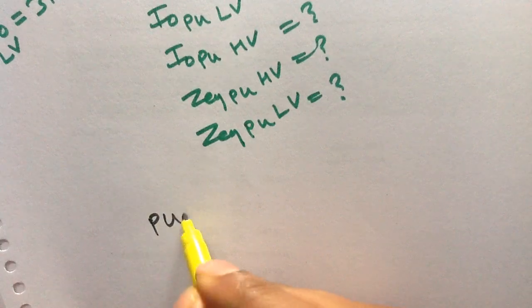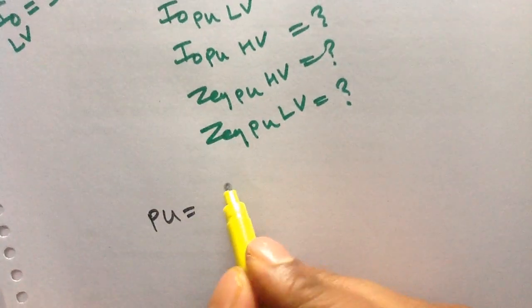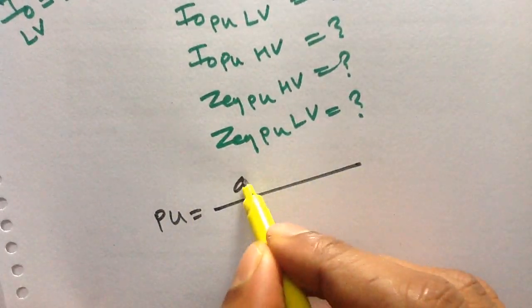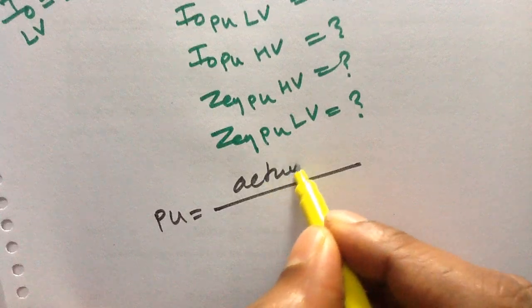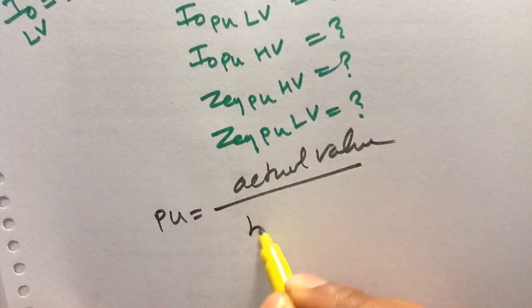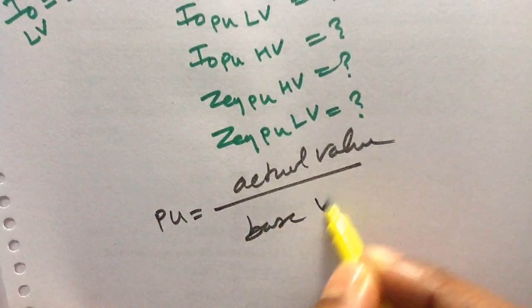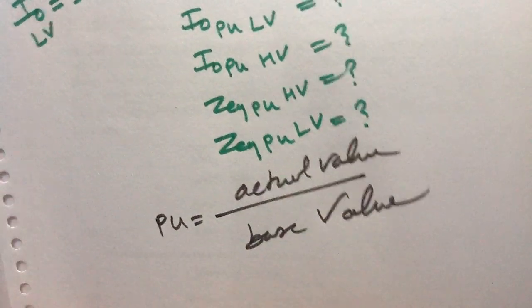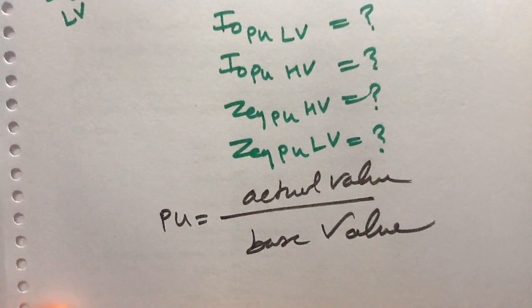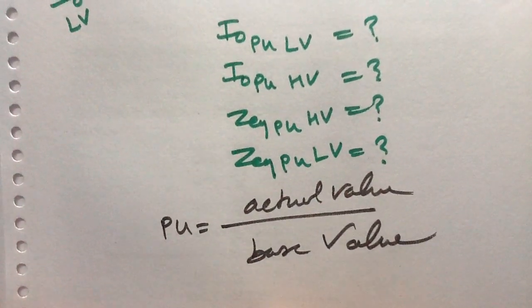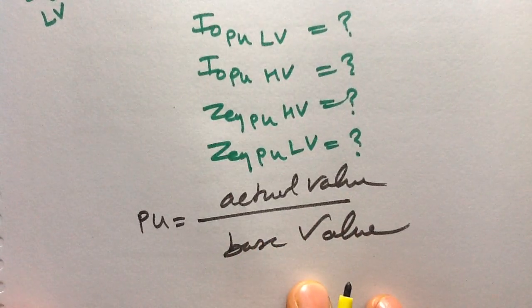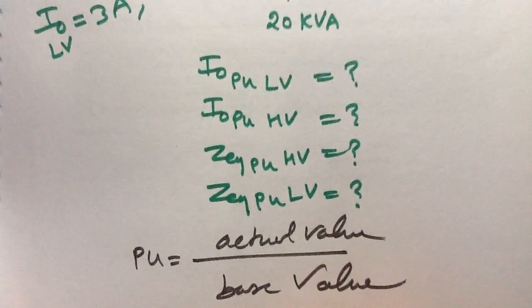The per unit value equals to actual value divided by the base value. This definition is known to everyone, and based on this definition we have to solve the problem.